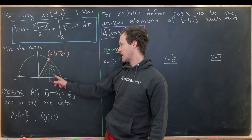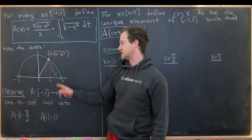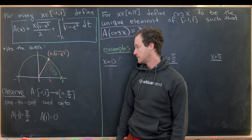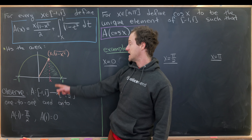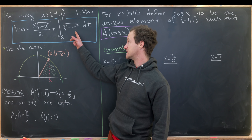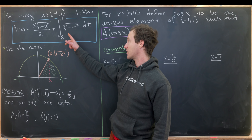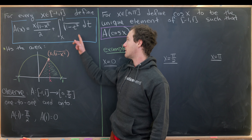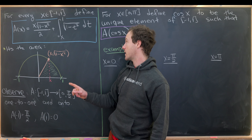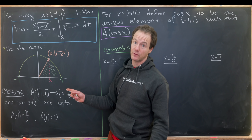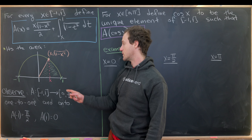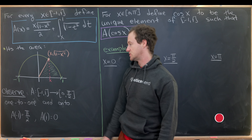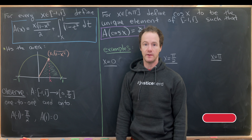Next, the piece to the right of the triangle is represented by the integral — the area under the curve square root of one minus t squared as t goes from x to one.